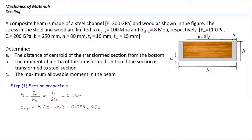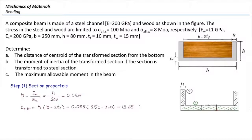Plugging the numbers: the width of the section is 250 and the thickness of the flange is 10 millimeters. So the new width for wood would be 12.65 millimeters. Now let me draw that and show you how the transformed section looks. We have this C-channel steel shape and the middle wood part now shrinks to this size. The only part that has changed is the middle part — it had a larger width initially and is now transformed to a smaller width of 12.65 millimeters.